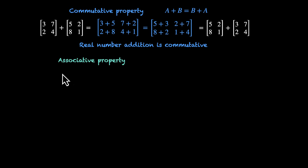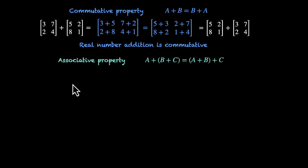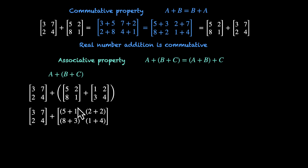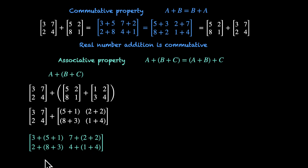Let's look at the associative property: A + (B + C) = (A + B) + C. With three matrices [3,7,2,4], [5,2,8,1], and [1,2,3,4], let's add B and C first: 5+1, 2+2, 8+3, 1+4. Let's not actually compute the sums yet, and instead bring the real numbers closer together. We have 3 + 5 + 1 for the first element, 7+2+2, 2+8+3, and 4+1+4. At this step, 3, 5, and 1 don't care whether they are in a matrix.